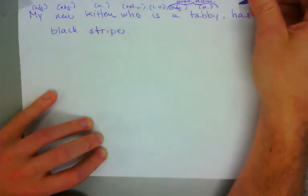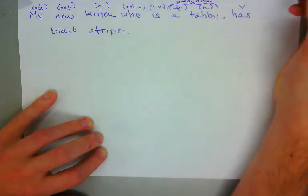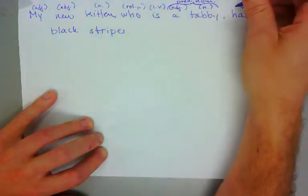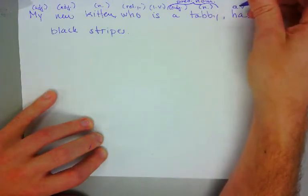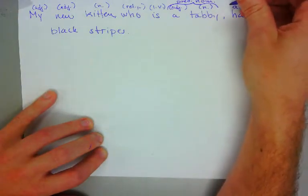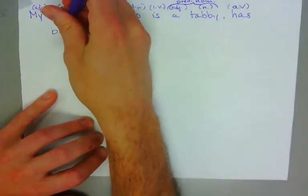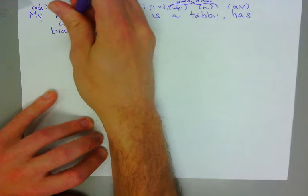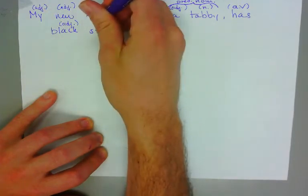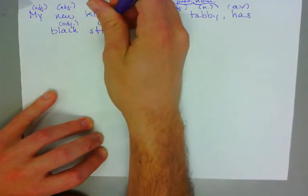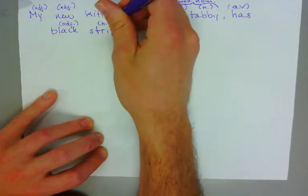That means that 'tabby' is going to be acting as our predicate nominative. 'Has' — we have another verb here — with 'black stripes.' In this case it's an action verb because we have a direct object. 'Has,' 'black' is an adjective, 'stripes' is a noun, and 'stripes' is acting as our direct object.